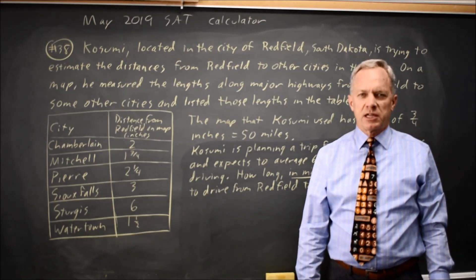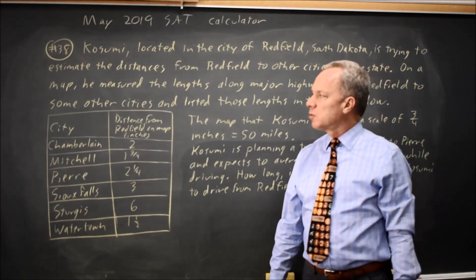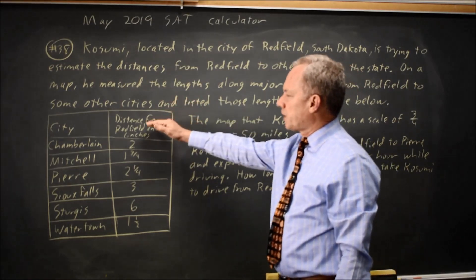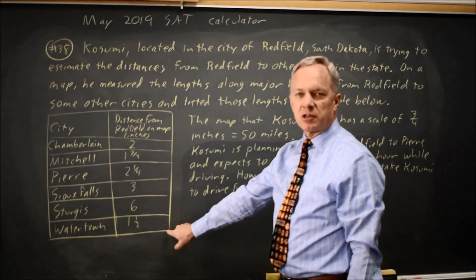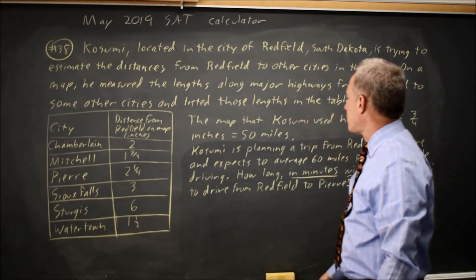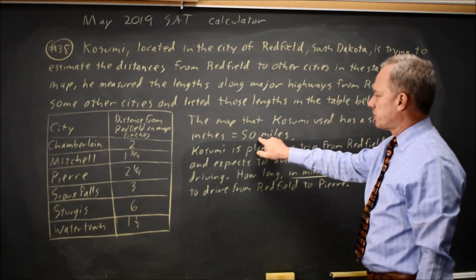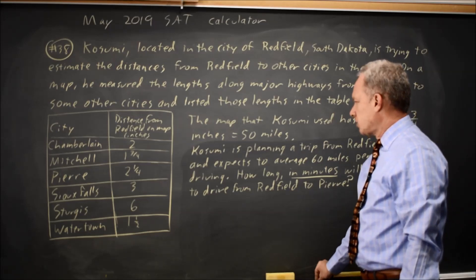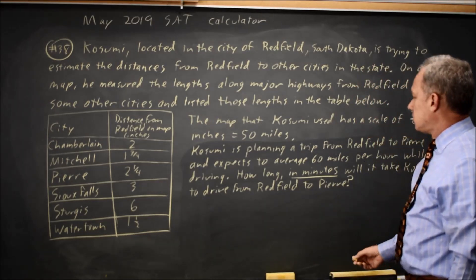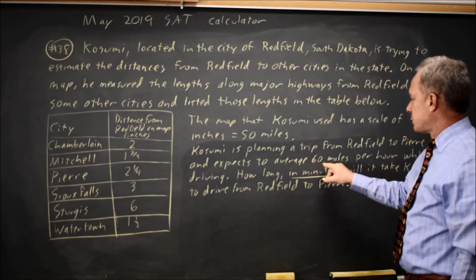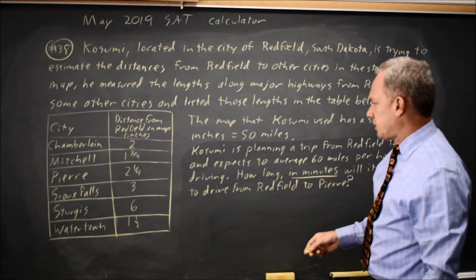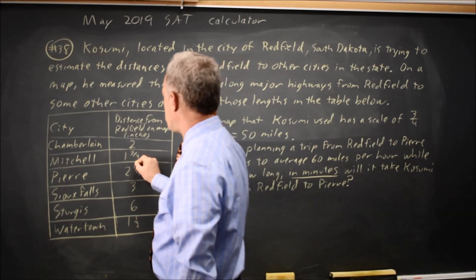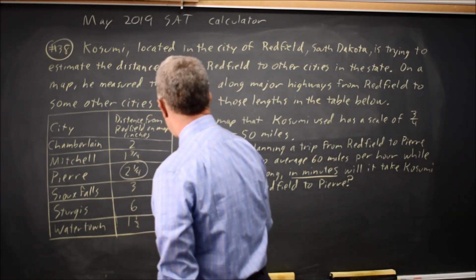This is calculator question 38 from the May 2019 International Exam. We're given a paragraph and a table of distances where the distances are measurements on a map in inches, and we have the map scale that 3 quarters of an inch is 50 miles. The question is: how long will it take to drive at 60 miles per hour on a drive that is 2 and 1 quarter inches on the map?